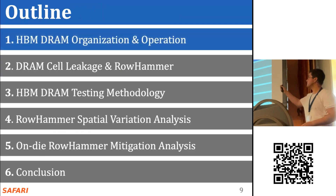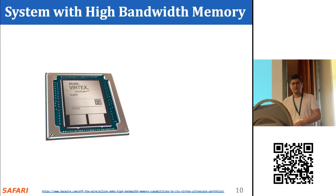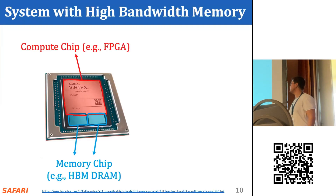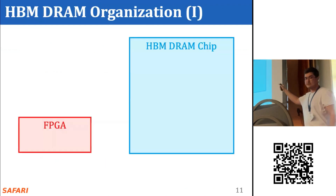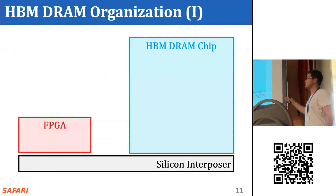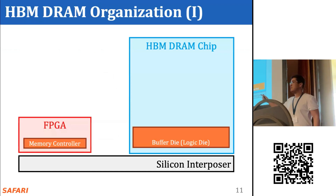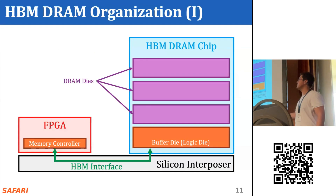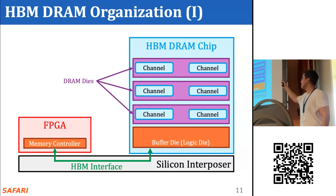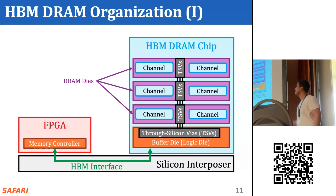Here's the outline of my talk. I'll continue by introducing HBM DRAM organization. A typical HBM2 DRAM system consists of a compute chip and multiple high-bandwidth memory DRAM chips, all integrated into the same package. We have the FPGA and the HBM DRAM chip on the same package connected by a silicon interposer. The memory controller in the FPGA communicates with the buffer die on the HBM chip over an HBM interface. The HBM chip contains multiple 3D-stacked DRAM dies, each with multiple channels connected to the buffer die through through-silicon vias.